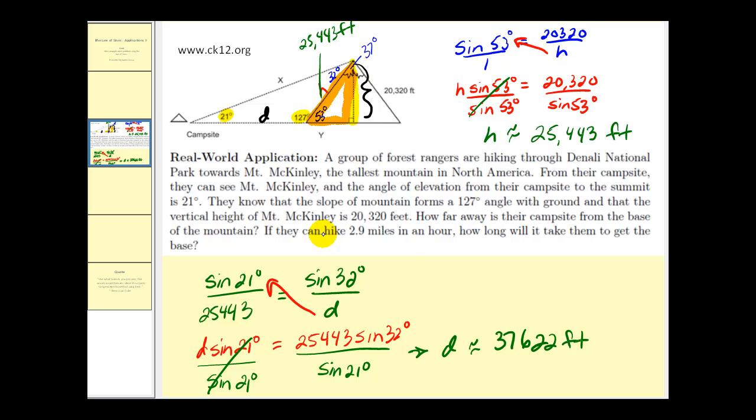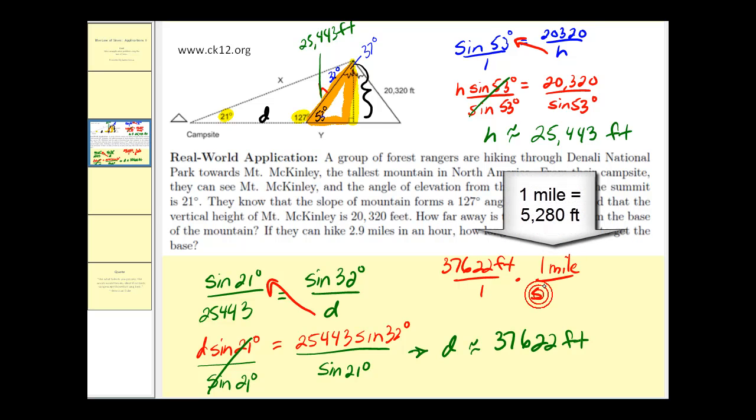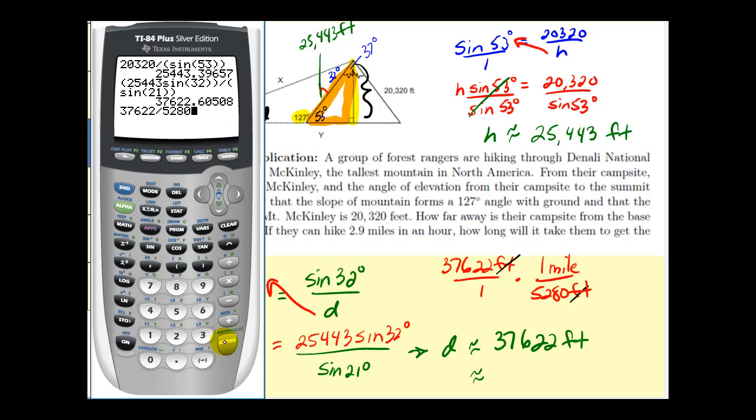Now since they're hiking in miles per hour, let's convert this distance into miles. So we could multiply this by one mile over 5,280 feet. This will simplify the units feet out. And now we can figure out how many miles this is by dividing by 5,280. So it's approximately 7.1 miles.